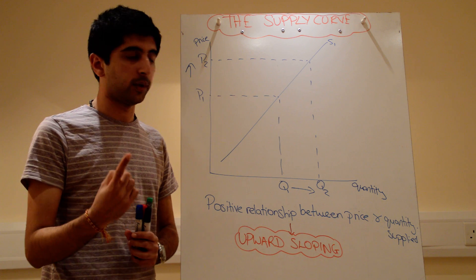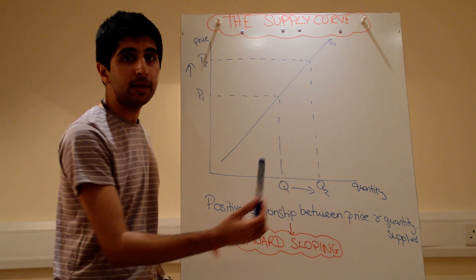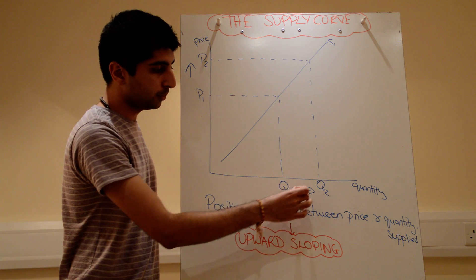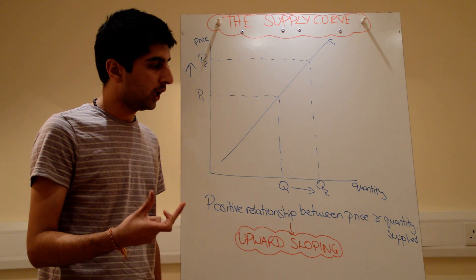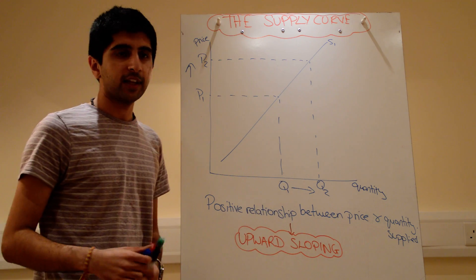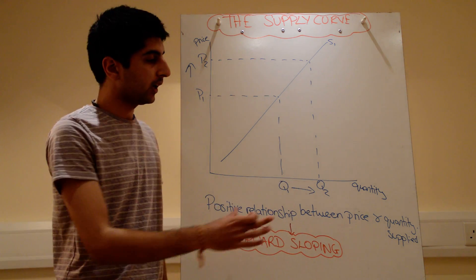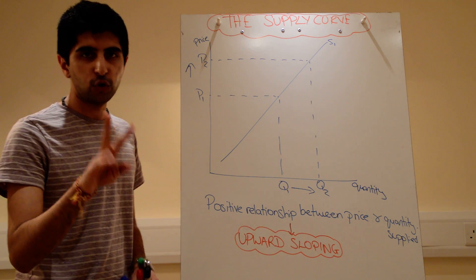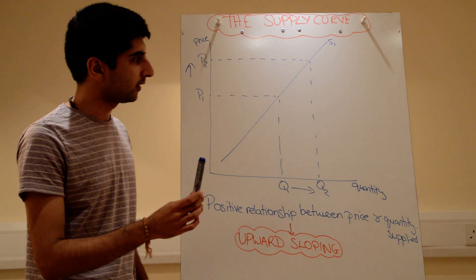Second, to increase quantity means to increase costs. Firms are only going to be willing to increase quantity if they can cover some or all of those costs. To cover that cost, you need to increase the price. So those are two main reasons why, at a higher price, quantity supplied will go up.